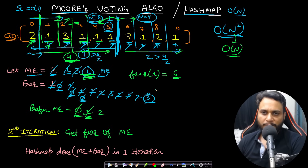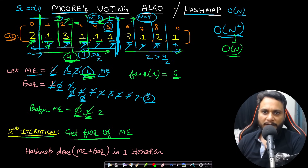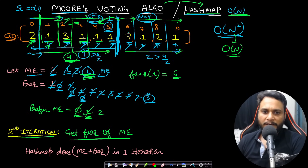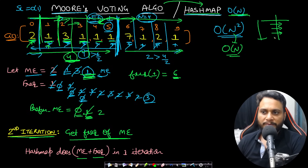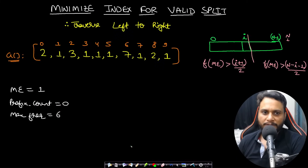If you use a hash map instead of Moore's Voting Algorithm, you still get O(n) time but O(n) space. With Moore's Voting Algorithm the space complexity is O(1). Finding the majority element with a hash map also requires iterating to find which item has the majority count, which may take O(n) as well. Both are O(n) time, but Moore's Voting Algorithm is better for space.